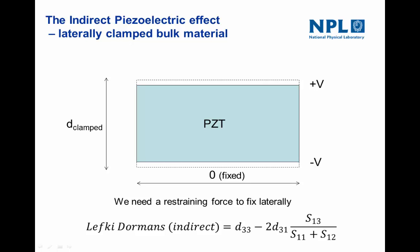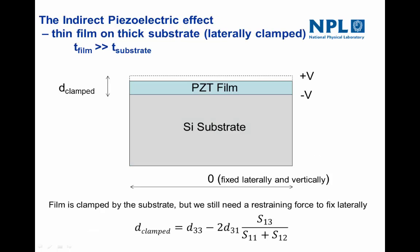The compliance coefficients S13 etc. describe how stiff the material is. When we make a thin film — say a micron-thick PZT on a much thicker substrate such as 500-micron silicon — the base is fixed laterally and vertically. The schematic shows that the film actually behaves as if the substrate weren't there: the boundary conditions do all the work in restraining the material, and it behaves exactly as the previous clamped case. This equation for the clamped change in thickness is the same as for a bulk material.